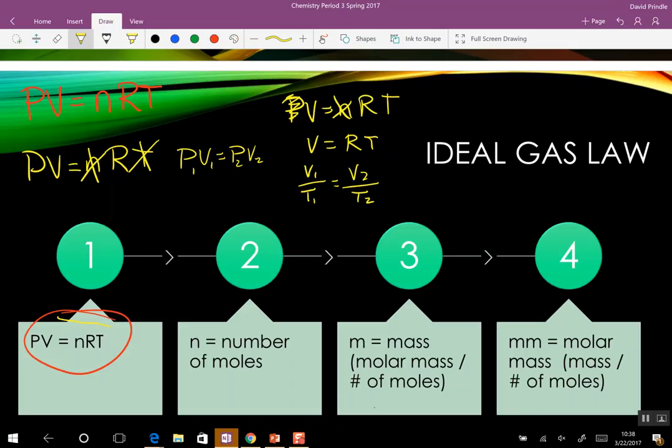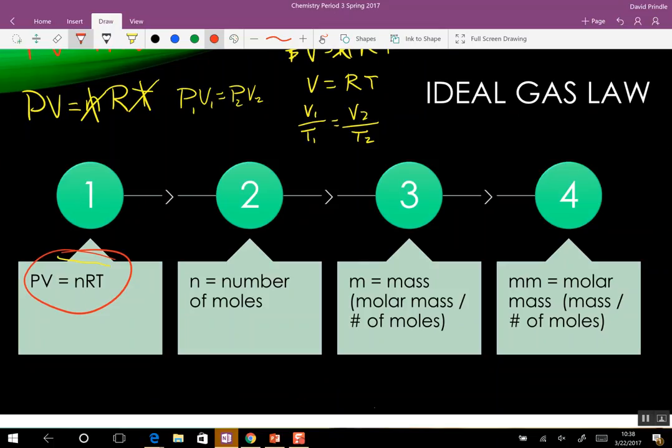The thing with ideal gas law is you need to know the number of moles of something. But a lot of times they're going to ask you for the mass of something or the molar mass of something. And we're going to do some examples of those problems today. So N is in PV equals NRT, and that's going to come in handy.